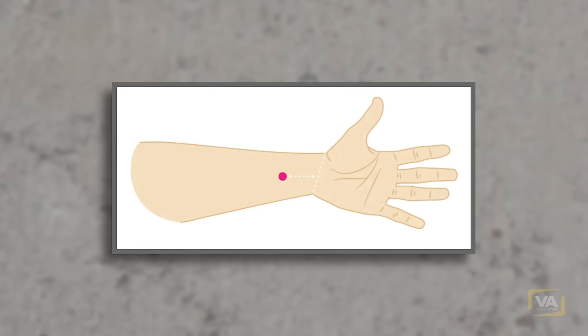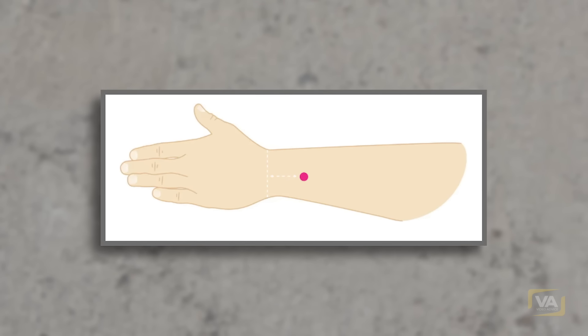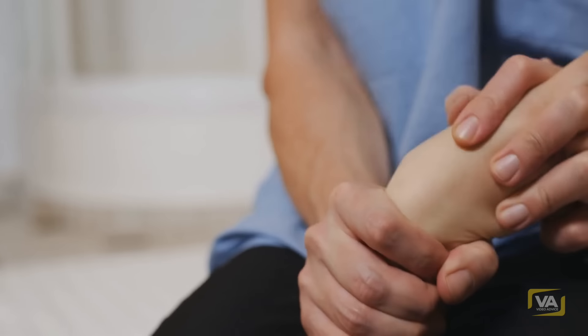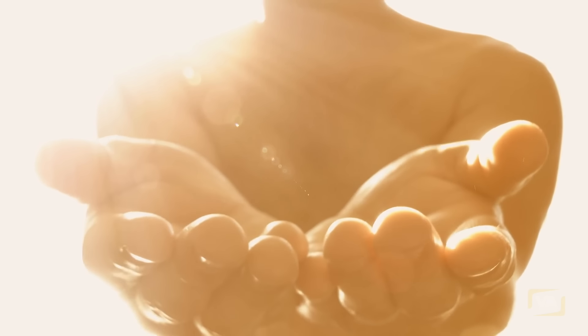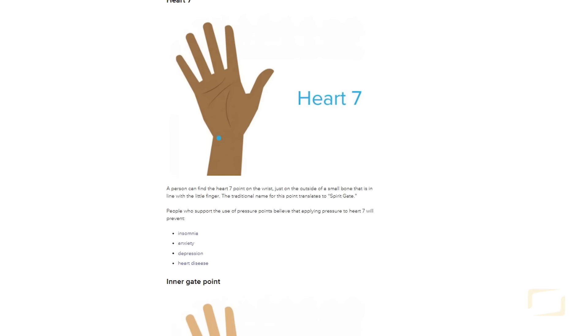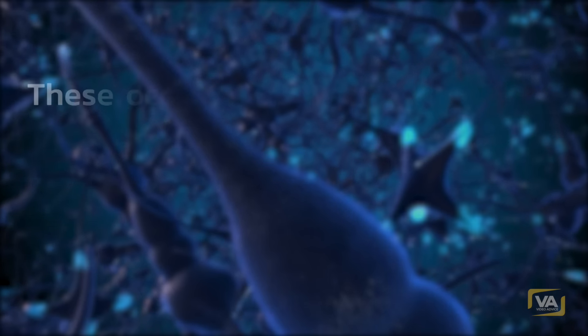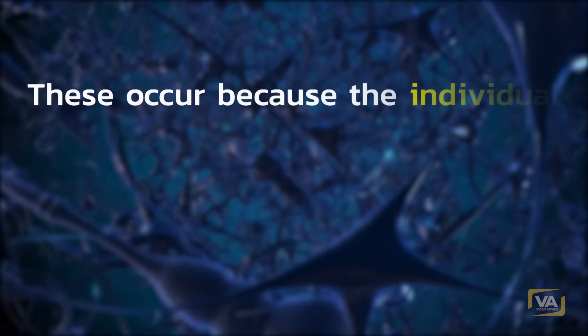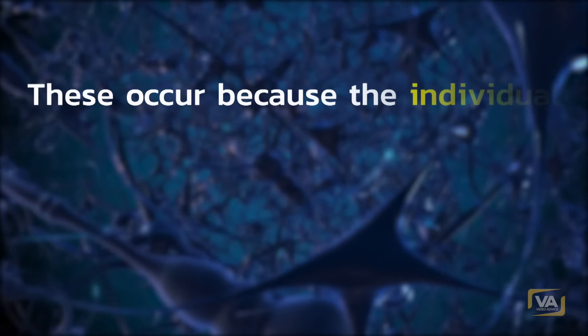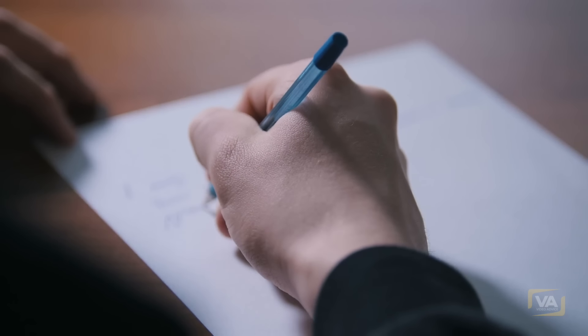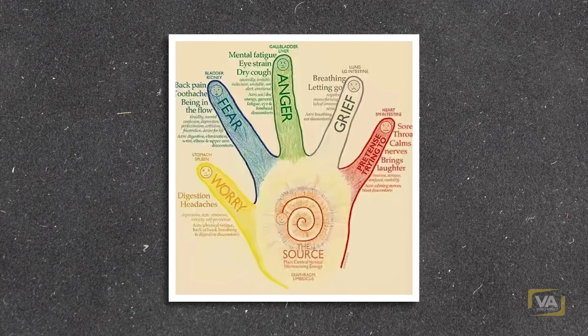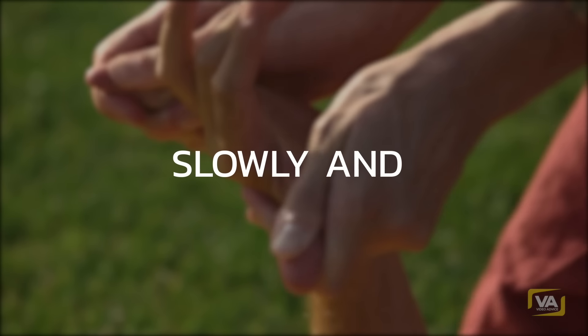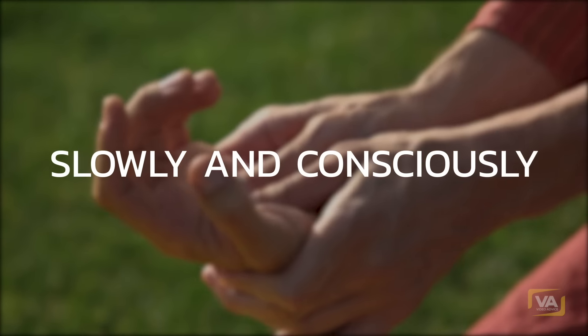Hand therapies: The following illustrations will show you various traditions that work with hand energy. This isn't meant to confuse you, but to show you how tremendously diverse this system is. If you take an exact look at it, you will even come across logical inconsistencies. These occur because the individual systems engage various levels, connected like threads that get lost in mysterious unfathomableness, and probably interconnect there. With a bit of imagination, you can put together your own program of hand exercises. You can't do anything wrong here if you carry out every movement slowly and consciously.